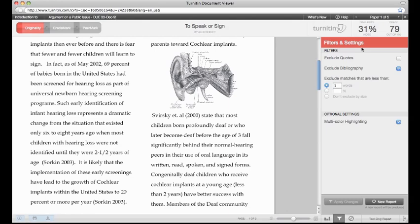The similarity index details the percentage of the paper that matches the Turnitin search. Therefore, this 31 percent is saying that 31 percent of this paper matches other sources in the database search.